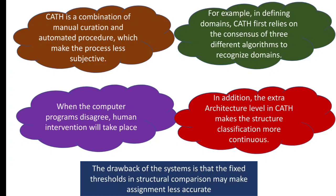A consensus is developed using different algorithms, but if a consensus doesn't develop and different algorithms don't give the same result, then human intervention is required — humans then do their work. In CATH, the architecture level is an extra level. One drawback is that exact threshold values are defined for quantity, which are chosen so that accuracy is as high as possible.